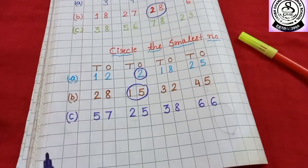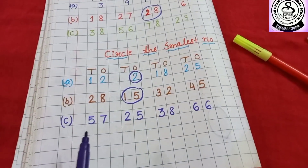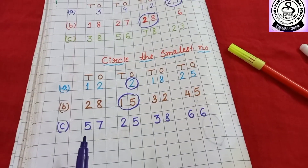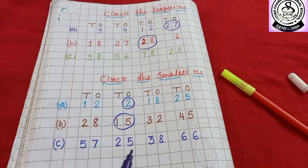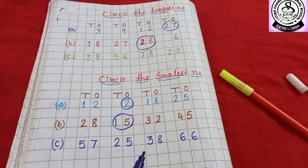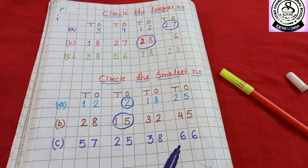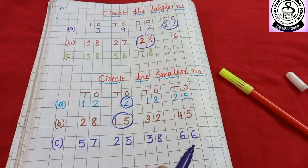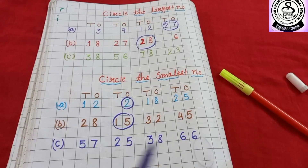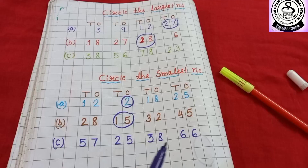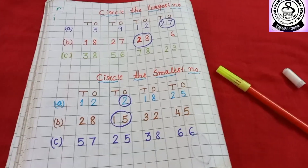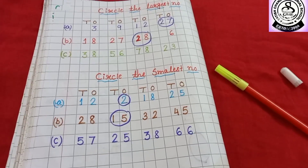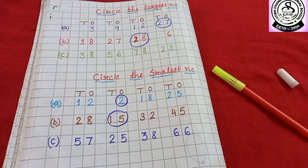There is number C — 57, 25, 38, and 66. So you have to do it by yourself. That's all for today.